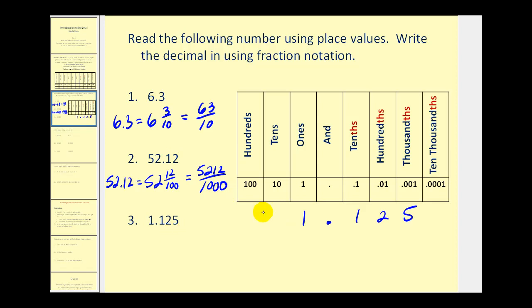In our last example, number 3, we would have 1 and 125 thousandths. So here's the decimal as a mixed number, and then as a fraction, it would be 1,125 thousandths.